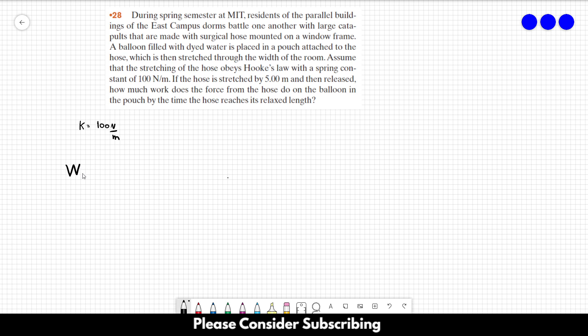All we have to do is apply the equation of the work done by the spring, which is equal to 1 over 2 K times the initial position squared minus 1 over 2 K times the final position squared.